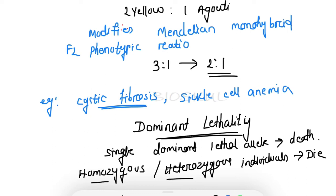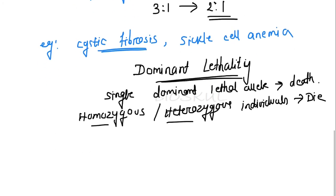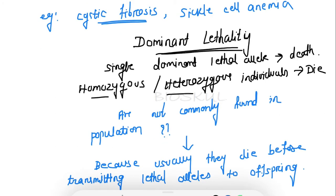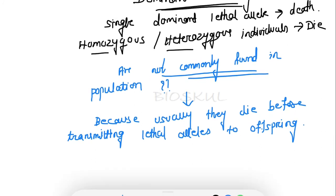Dominant lethal alleles are not commonly found in the population, because they usually result in the death of an organism before it can transmit its lethal allele to its offspring. Therefore, dominant lethality is usually not maintained in the population.